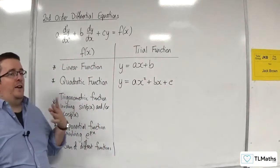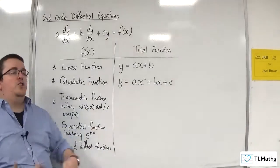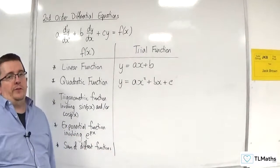So if the right-hand side of the f of x was a cubic, the trial function would be a cubic, and so on and so forth.